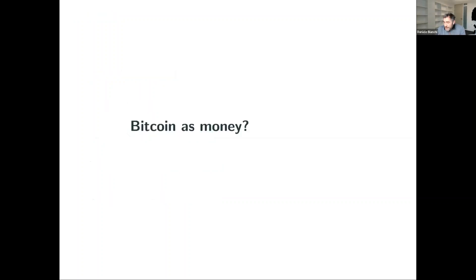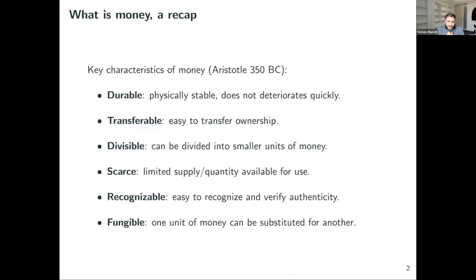Can we think about Bitcoin as money? First, let's recap what money is. Key characteristics of money have been laid out for centuries: money needs to be durable, transferable, divisible into smaller units, scarce or at least limited in supply, easy to verify and recognizable, and fungible — so one unit can be a substitute for another. These characteristics are clear, but understanding the intrinsic value of money is a trickier question.